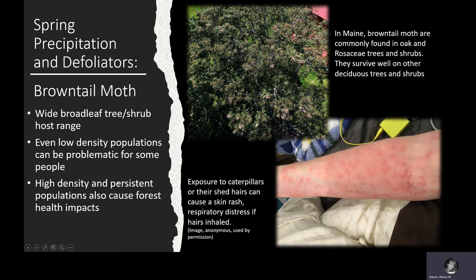Brown tail moth has a wide host range, including many broadleaf trees and shrubs. In Maine, it is most frequently encountered on rose family hosts such as apples, cherries, serviceberries, hawthorns and others, and also on oaks including both red and white oak groups. It can also survive really well on other hardwood trees and shrubs — we find it fairly frequently on white and gray birch and also on elm species.